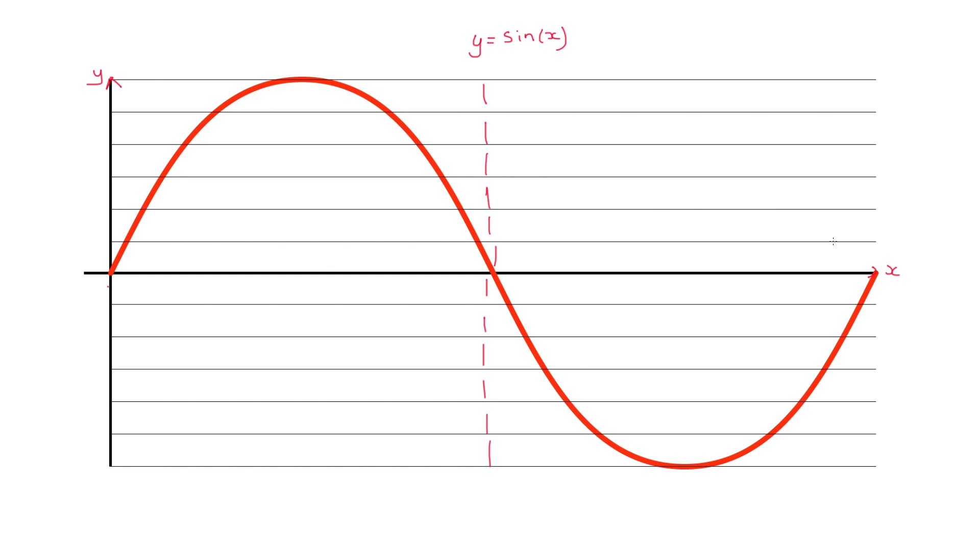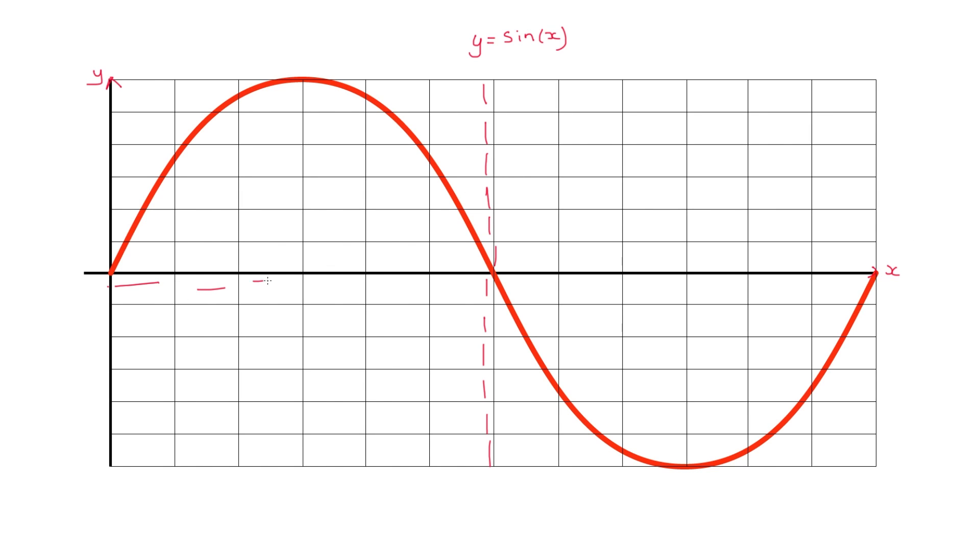We can also split it the same the other direction giving us 1, 2, 3, 4, 5, 6 in this segment where the y is positive and 1, 2, 3, 4, 5, 6 in this section where the y is negative. And this is why it's called the rule of 12ths. We've literally overlaid a 12 by 12 grid over our sine curve.